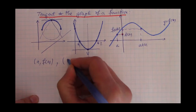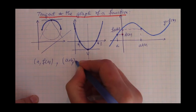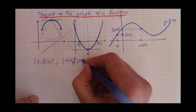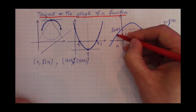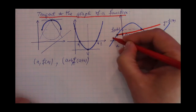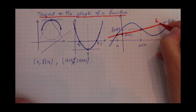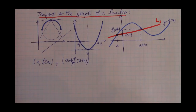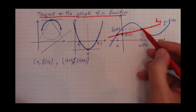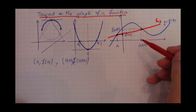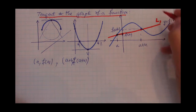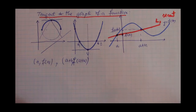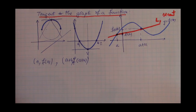So now we have two points on the graph: (a, f(a)) and (a+h, f(a+h)). We can always draw the line through these two points — let's call this line l1. When we have two points on the graph of a function and draw the line connecting them, we call this line a secant.